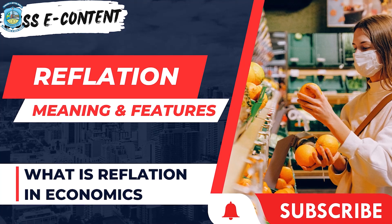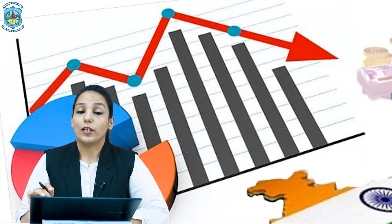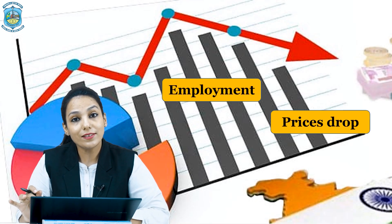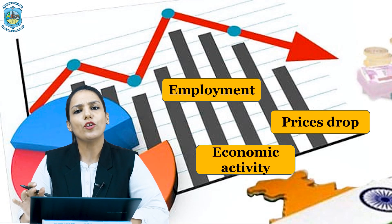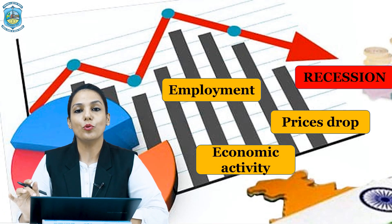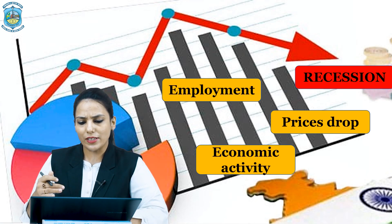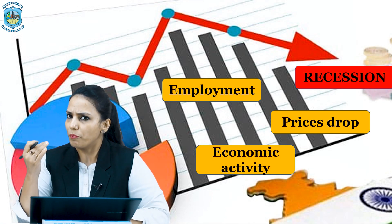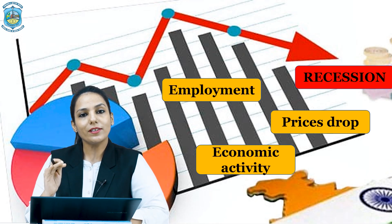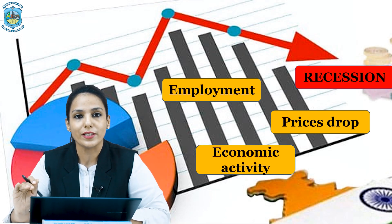Every economy experiences cycles of growth and decline — like employment decreases, prices decrease, and all economic activities decrease. This leads to recession. When this happens, there is a steady decrease in employment, prices decrease, economic activities decrease, and the economy experiences a contraction that could lead to recession.